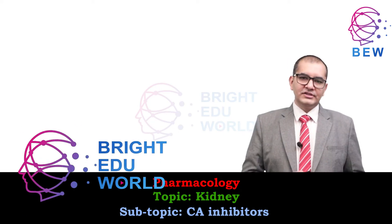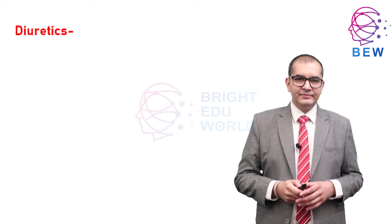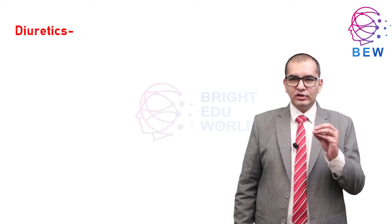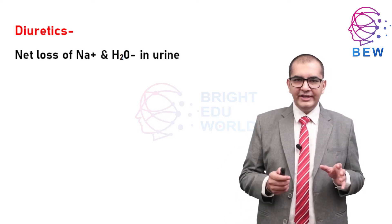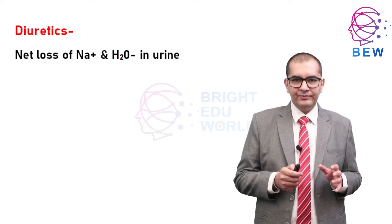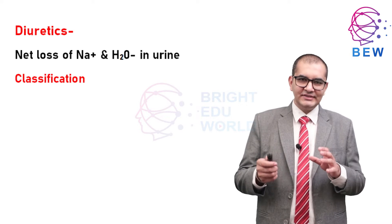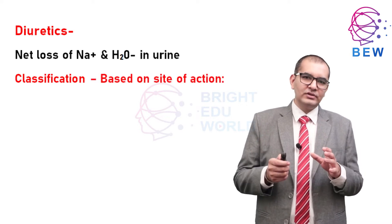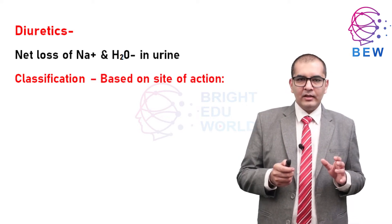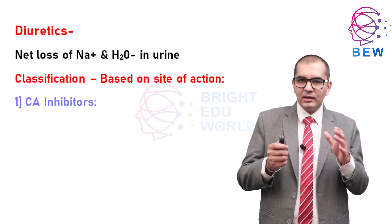The topic of our discussion is diuretics. These are drugs which cause a net loss of sodium and water in urine. Let's see the classification of diuretics based on site of action. The first class of drug is carbonic anhydrase inhibitors.